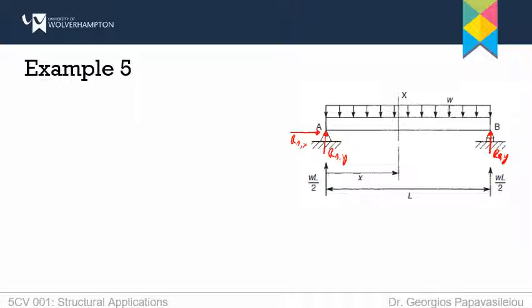Before I can start working out the support reactions, I need to also calculate the resultant of the uniformly distributed load over here. It is a rectangular uniformly distributed load, so its resultant will be a point load in the mid-span, and its magnitude will be the area of this shape, or W times the span over which it applies, so W times L.